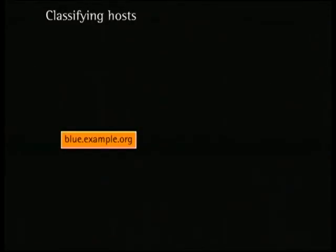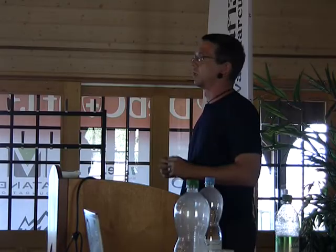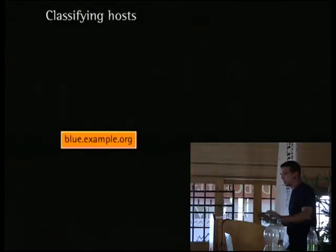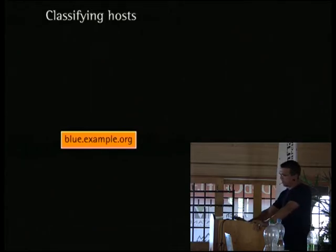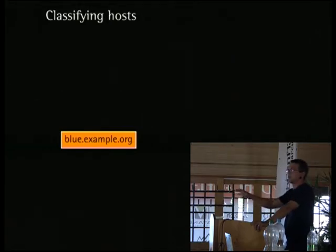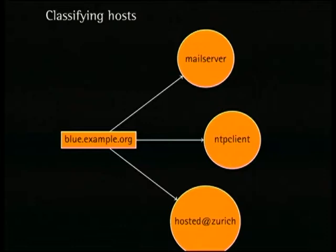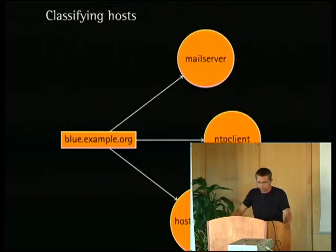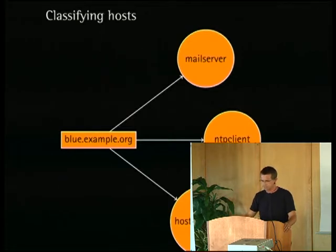How I think about it: when I have a node called blue.example.org, I want to say this node has certain classes and behaviors — rather than saying 'this behavior should be targeted at this node.' I say this node belongs to the classes 'mail server,' 'ntp client,' and 'hosted at zurich.' This is very much CFEngine-inspired — that's what the first configuration management system I know did, and I got to know it through someone and really liked the idea. It stuck.